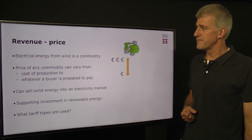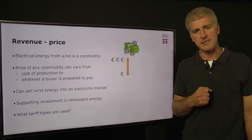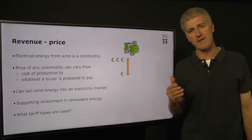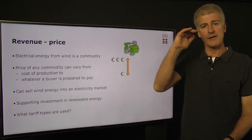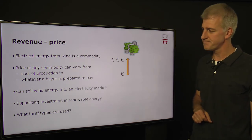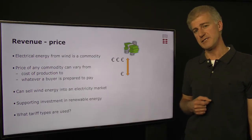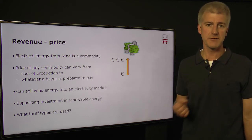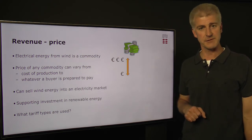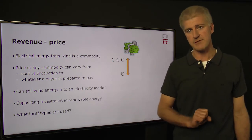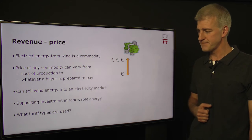Looking at the other half of revenue — the price — electrical energy from wind turbines is a commodity. Just like any other commodity, it can be bought and sold, and the price can vary from how much it actually costs to produce up to anything that somebody is prepared to pay for it on the open market. As a wind farm operator, we can sell into this electricity market, but the challenge is that we are always receiving a varying price for our wind energy. In many countries, supporting investment in renewable energy is important because it reduces CO2 output and makes a country less dependent on fossil fuels. Most commonly, we use different types of tariff on the electricity price.